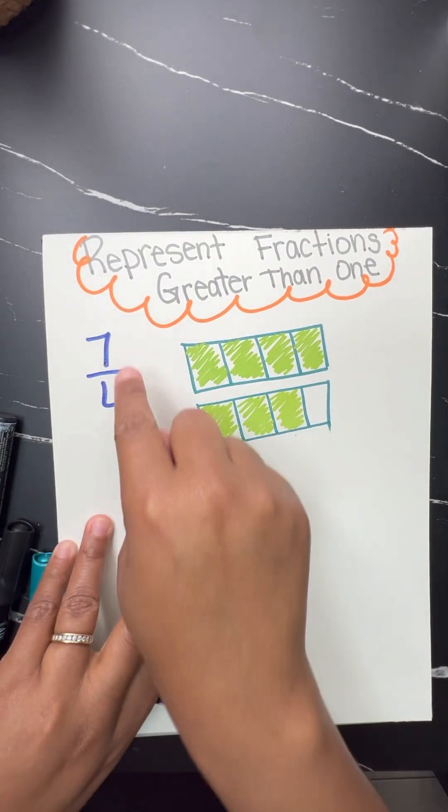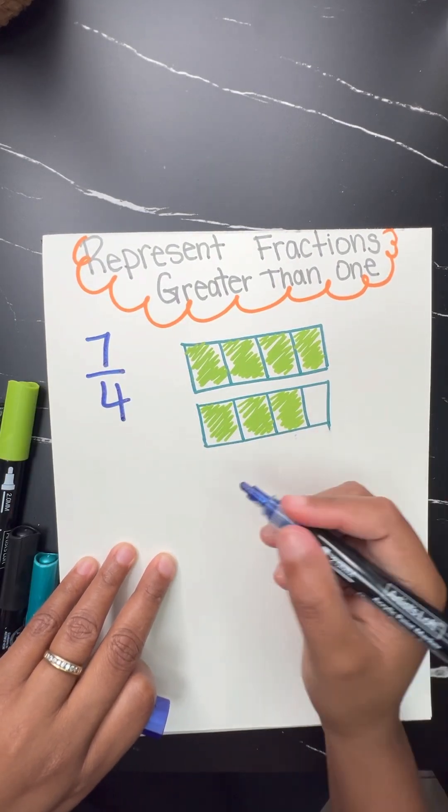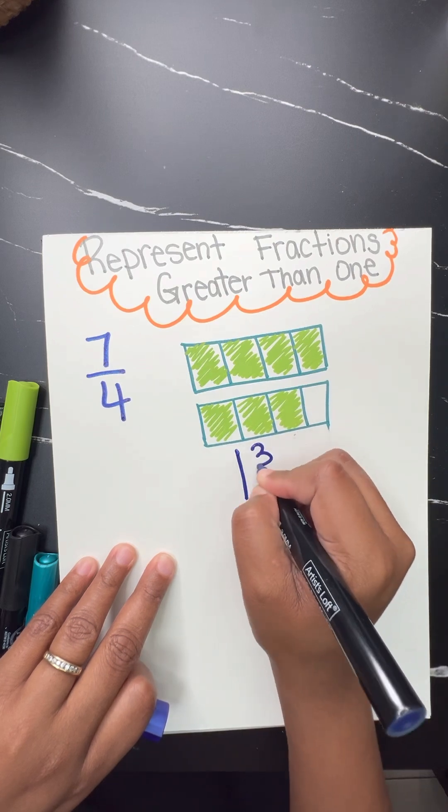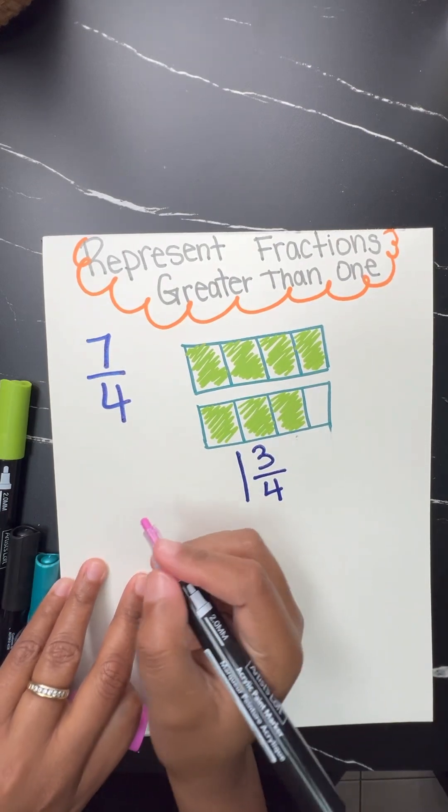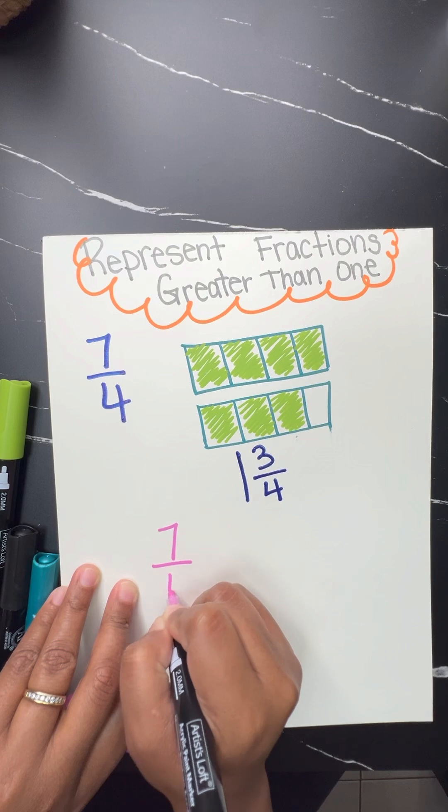Now, in order to represent 7 fourths, we had to shade one whole, and then in the other model, we had to shade three of those four.